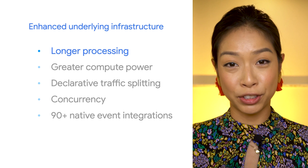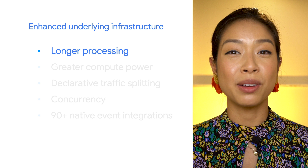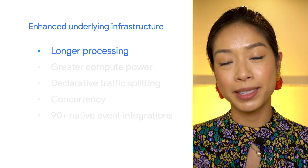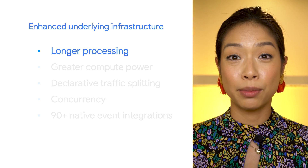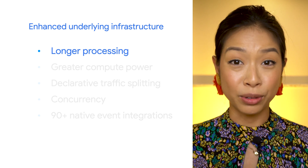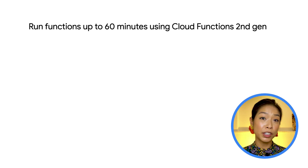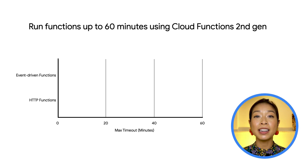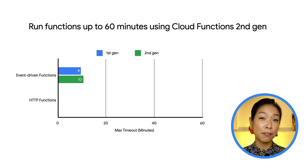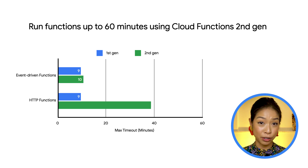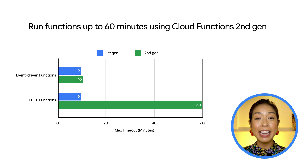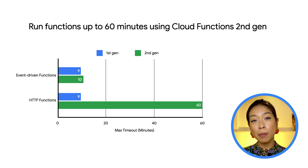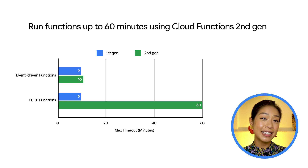Let's dig into how these features work, starting with one of the ones developers asked for the most: running functions with longer execution times. Event-driven functions can now run an additional minute compared to the previous generation, and HTTP functions can run more than six times longer in Second Gen. This means you can now bring more complex functions that perform more intensive processing to Cloud Functions.